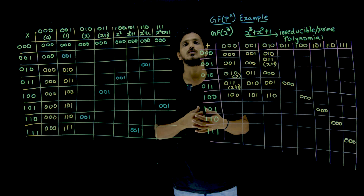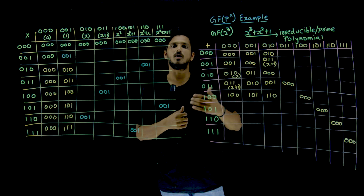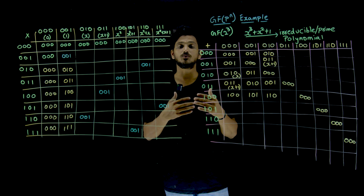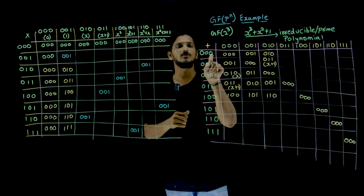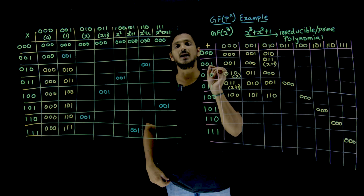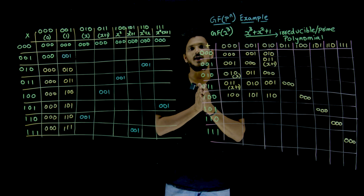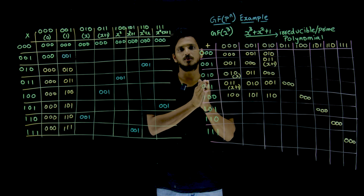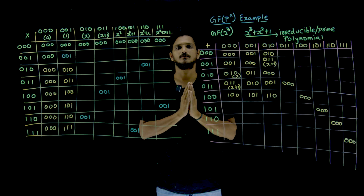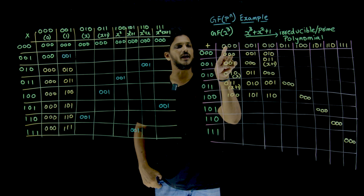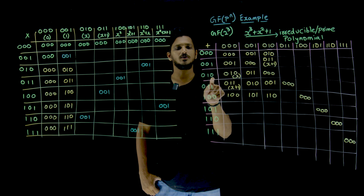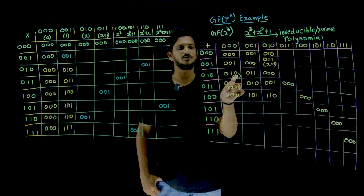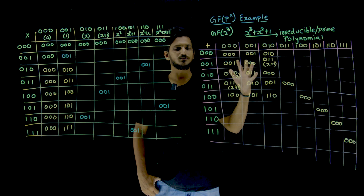XOR satisfies the associative property and commutative property. What is the identity element for addition? 000. This is the identity element for addition, because you add any number with 0, you are going to get the same number. 001 addition with 000 gives 001. 010 addition with 000 gives 010. Because of lack of space, we did not mention the polynomial expression.